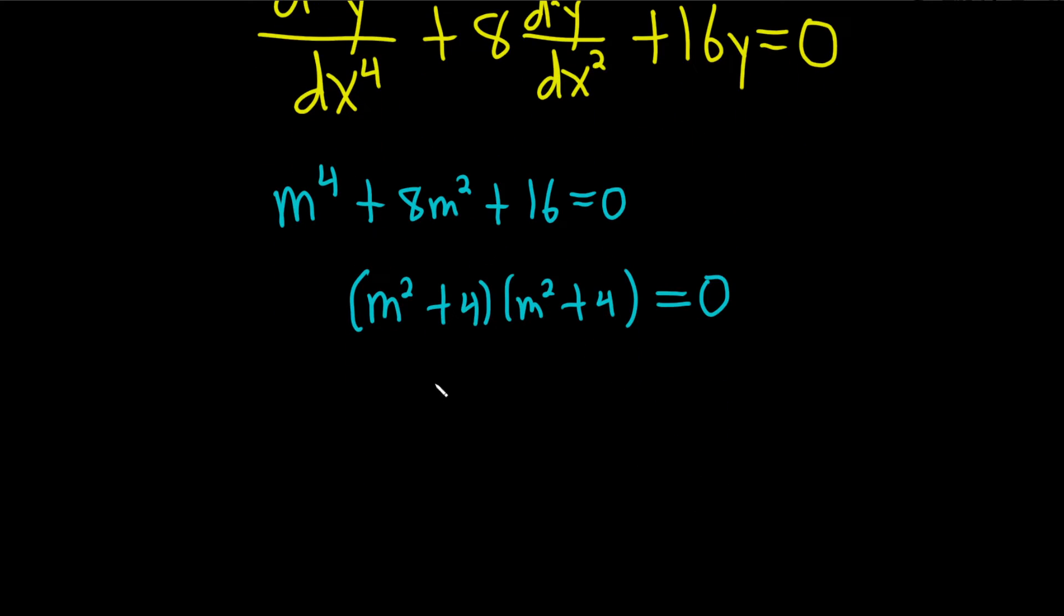All right, so you end up with m squared plus 4 quantity squared. And I want to emphasize that it appears twice. So we're going to have an answer of multiplicity 2.